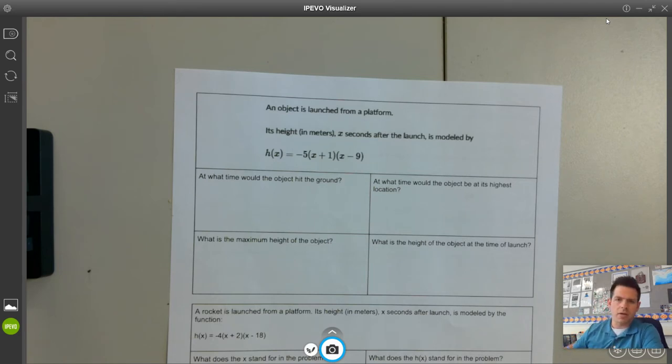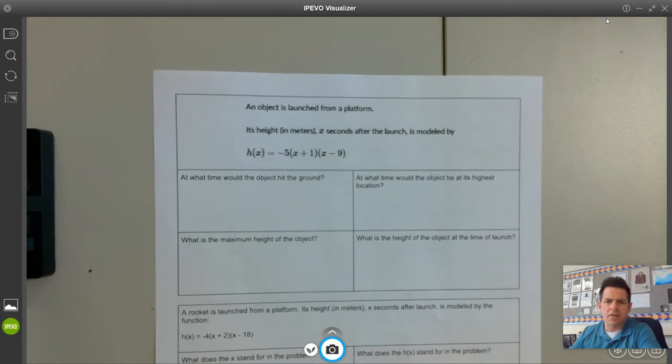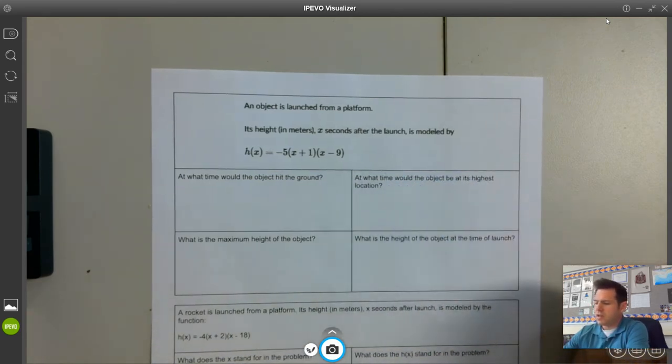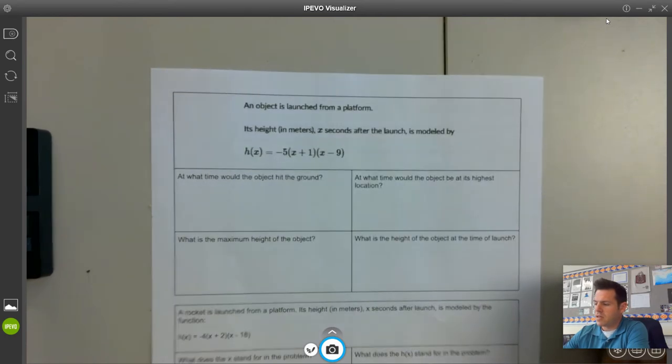This one right here would be on the back side, the intercept form application problem. We really like intercept form because it does a really nice job of telling us a lot of information about the ground level. So this is the first one that we did of the three. We have our function here. An object is launched from a platform. Its height in meters X seconds after the launch is modeled by that function right there.